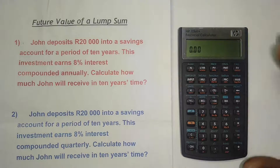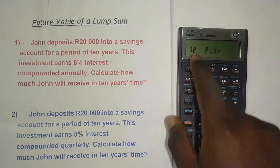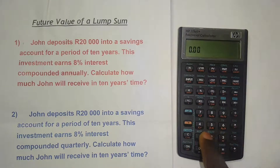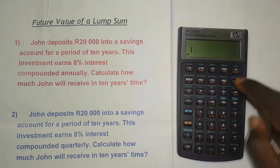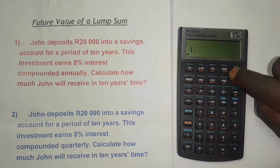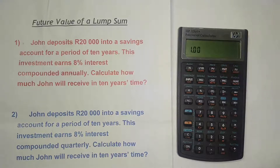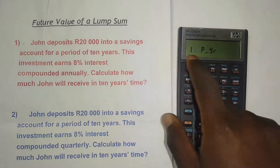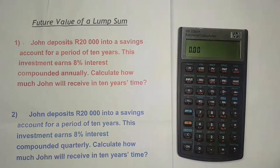To check the current setting, press the orange button and then C — you can see it's showing 12 times per year. To change it to once per year, press 1, then press the orange button, then press the PMT key (which has P/YR written under it). It has now changed to 1 compounding per year. To confirm, press the orange button and C again — you can see it's now 1 per year.